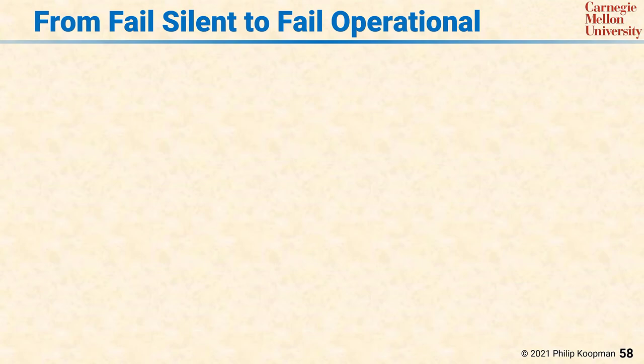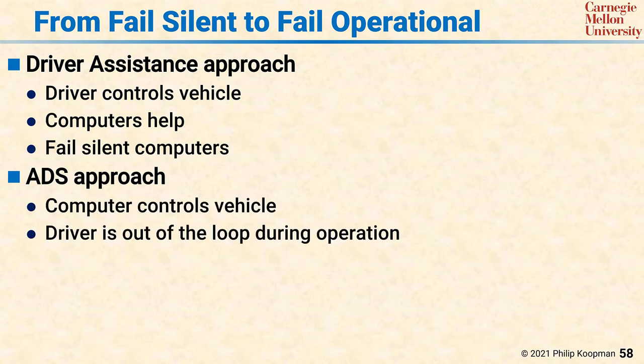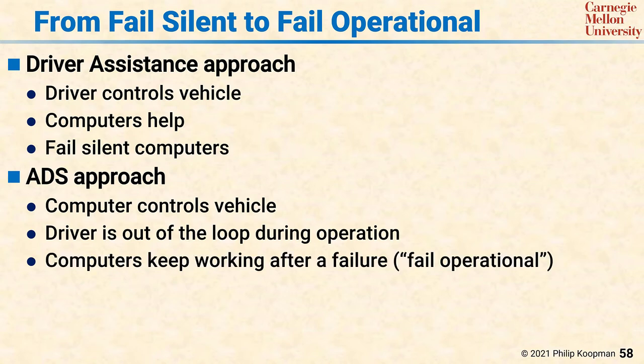A significant architectural distinction between driver assistance and automated driving systems is how failures are handled. For driver assistance features, it's normally sufficient for those features to fail silent — meaning if the driver assistance feature cannot operate properly, it needs to detect that it has a problem and shut down that feature so that the driver can continue to drive without the feature causing problems. When switching to a fully automated system, the computer controls the vehicle with no driver continuously in the loop overseeing vehicle operation. That means a computer failure has to result in a system that can still maintain control — in other words, fail operational.